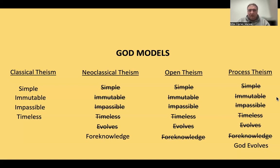Then you have in-between positions. Neoclassical theism rejects some of the classical attributes of God but still maintains some traditional attributes like cognitions, omnipotence, and foreknowledge. Open theism is almost the same, except that they reject foreknowledge as well. Open theists tend to be very adamant that they're not process theists — they try to differentiate themselves from process theologians, rejecting the idea that God is progressing or evolving over time. But they do reject the concept of foreknowledge.